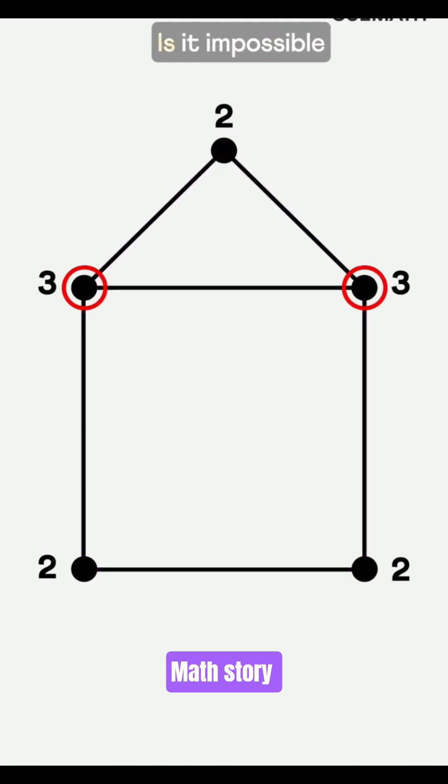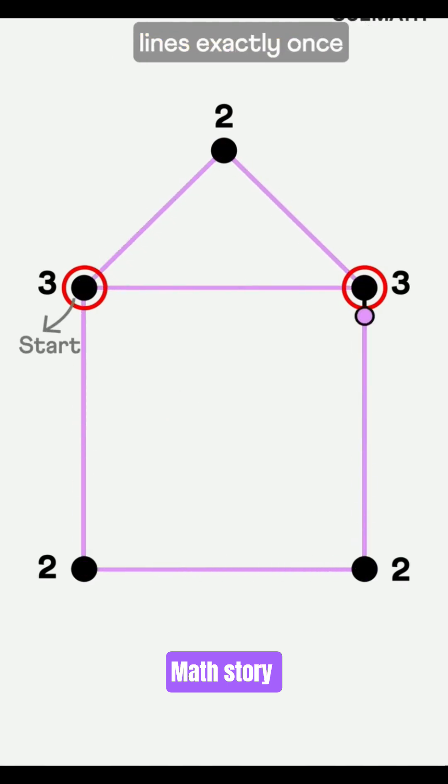What if some points have odd connections? Is it impossible to cover them? Not always. If we start from one, we can cover all lines exactly once and end at the other.